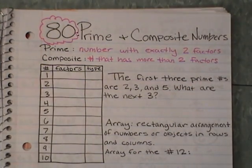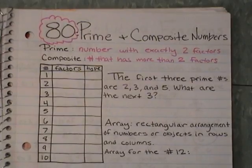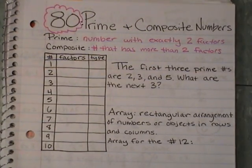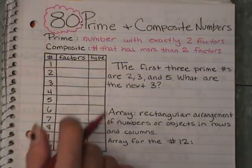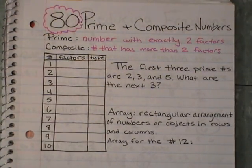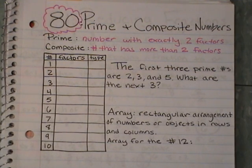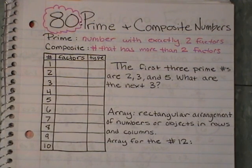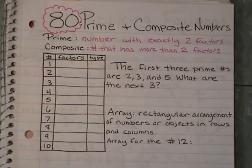What we're going to do is fill out this chart. These are the numbers we're going to talk about — just numbers 1 through 10 — and talk about their factors, and then talk about what type they would be: would they be prime or would they be composite?